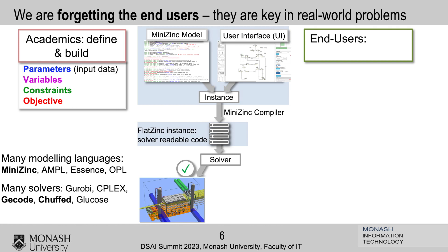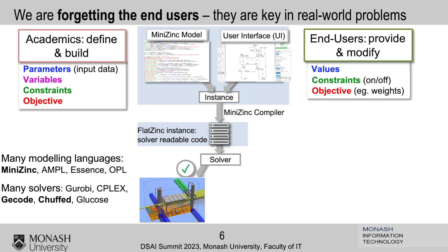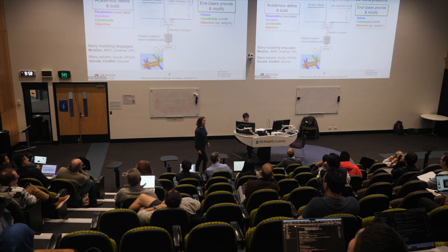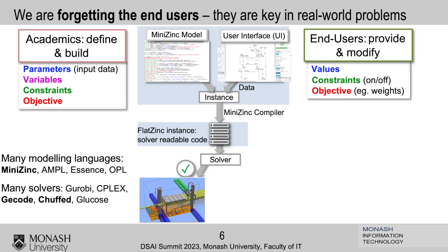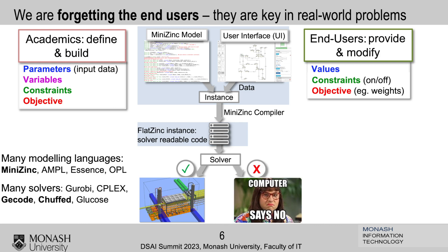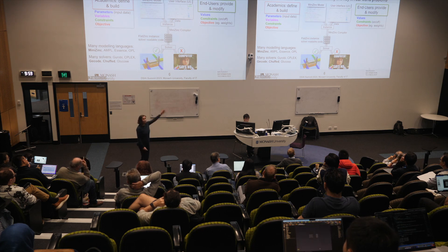If we are good, we're not going to give them the raw data — we're going to give them a proper user interface, something powerful that they can use to give values, modify them on the fly, try different scenarios, and also modify the constraints and the objective. What if I turn this on? What if I turn this off? And what happens when that happens?